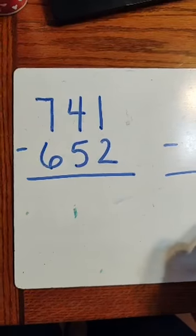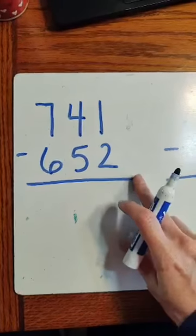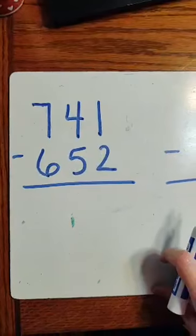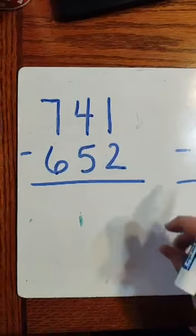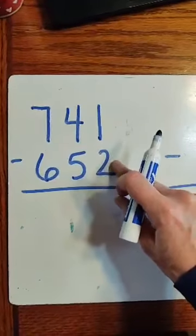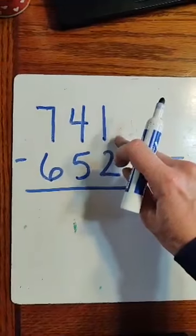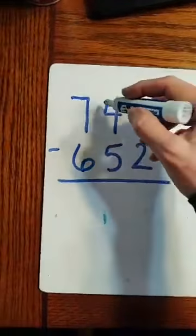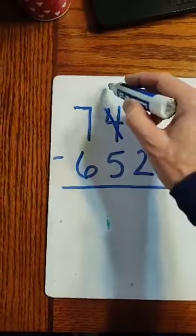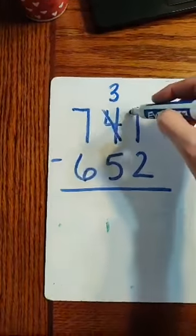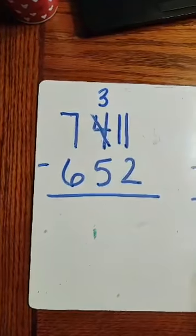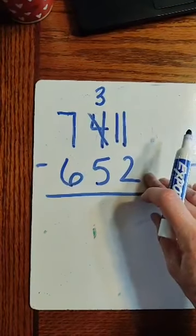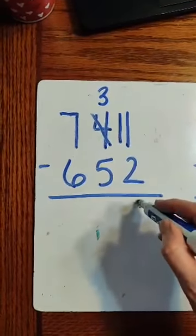So I get started and we know whenever we add or subtract or whatever we're doing here, we're always going to start on the right. We're going to start in that ones column. So I look here and I see my 1, 1 minus 2. Well, I can't do that because the bottom's bigger, better borrow. So I go next door to my 10s and I take 1 from there and I give that 10 to this one. So now I have 11 minus 2. 11 minus 2, 9.